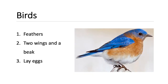This is a bird — it's a bluebird. Birds are animals with backbones and they are the only animals with feathers. All birds have two wings and a beak. The beak of a bird is used to get food. They also lay eggs to hatch their young.